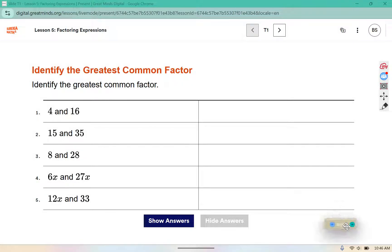Identify the greatest common factor. Typically, we use a factor tree, so I'm going to work with number 4 and number 5. This can be broken into 6 times x, and 6 can be broken into 3 times 2. 27x, we can break that into 9 and 3x. 9 can be broken into 3 times 3, and 3x can be broken into 3 times x.